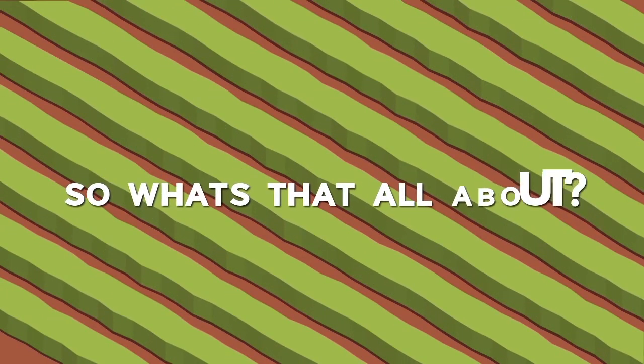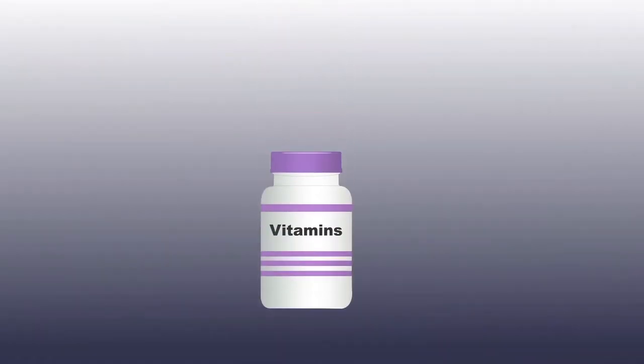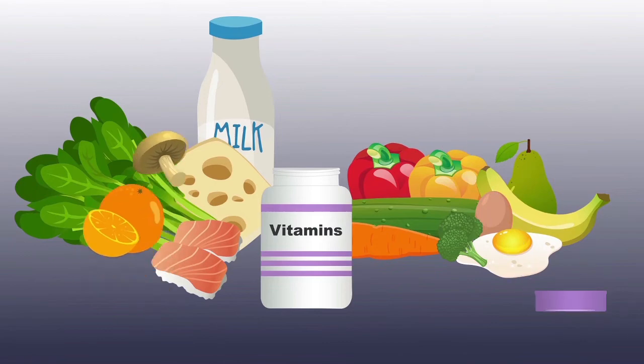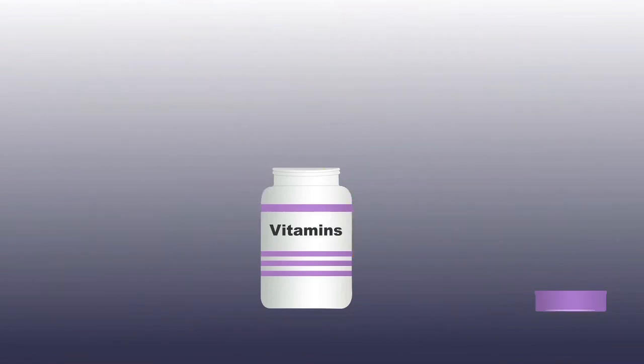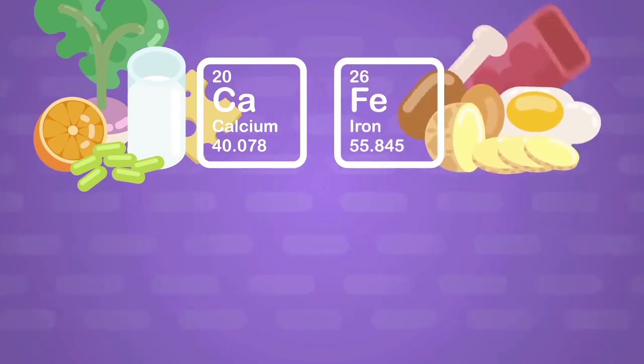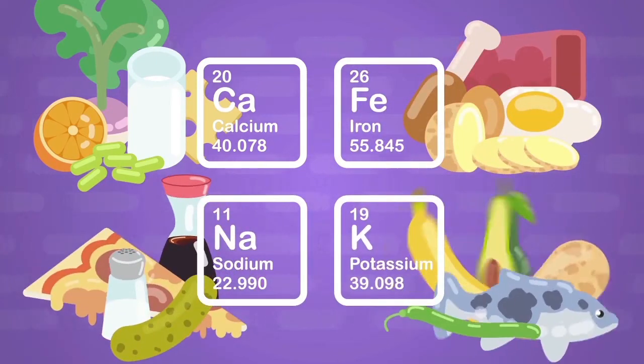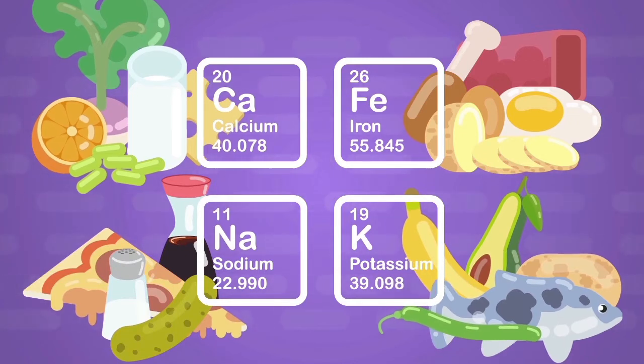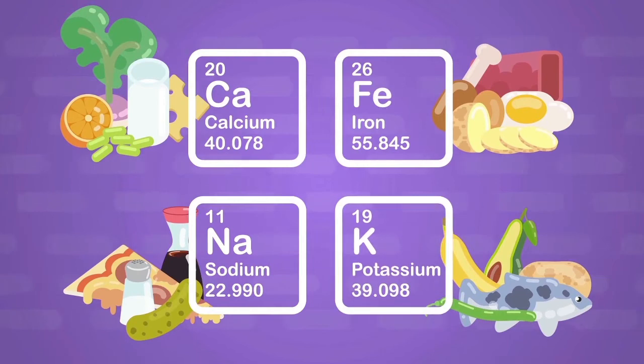So, what's that all about? Well, even humans need to eat certain minerals and chemicals to keep us healthy and functioning well. We need calcium for our bones. We need iron for our blood. We even need sodium and potassium for our brains and nerves. But generally speaking, we only need small amounts of these elements and minerals.